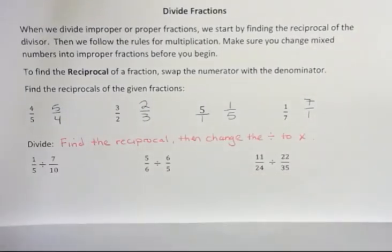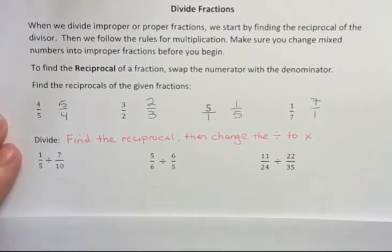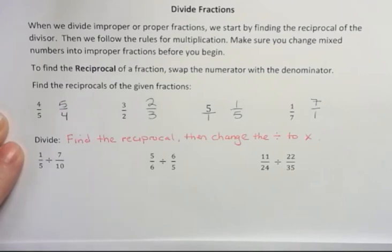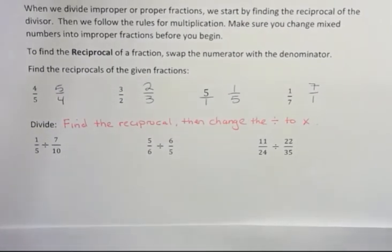When you divide, you find the reciprocal, then you change the division to a multiplication sign. And what are we finding? We're finding the reciprocal of the divisor. So which one is the divisor?